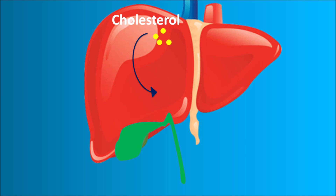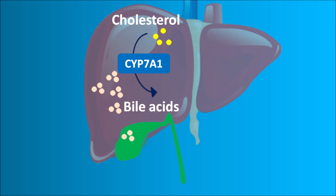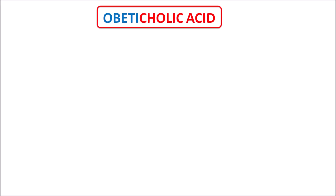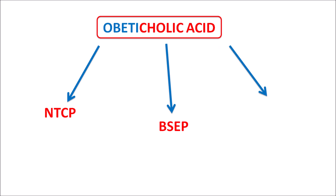Within the liver, cholesterol is metabolized to produce bile acids through a multi-step process mediated mainly by the enzyme CYP7A1. The bile acids are stored in the gallbladder, and some are taken up by hepatocytes through portal circulation. When bile acids are excessively increased in the liver, they produce apoptosis and damage. Excessive bile acids also form gallstones within the gallbladder, obstructing bile flow, leading to biliary and hepatic cirrhosis. Obeticholic acid addresses this by acting on three types of transporters: NTCP, BSEP, and ASBT.